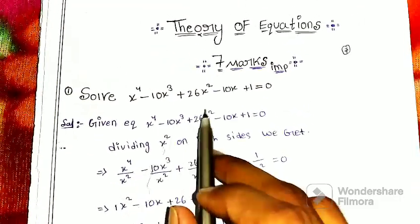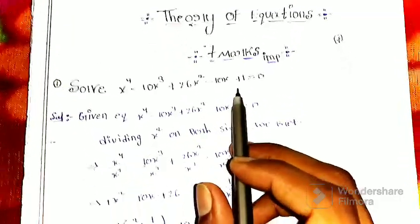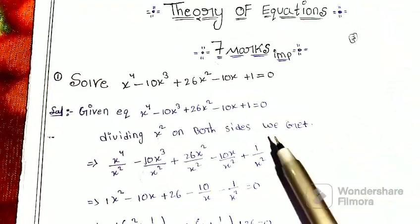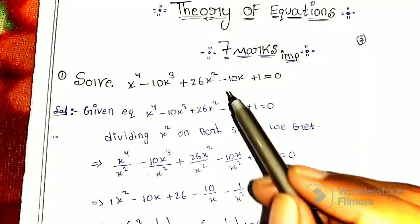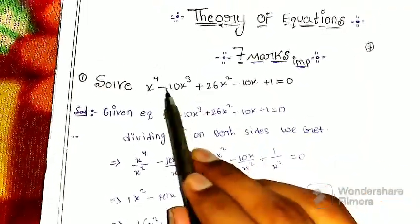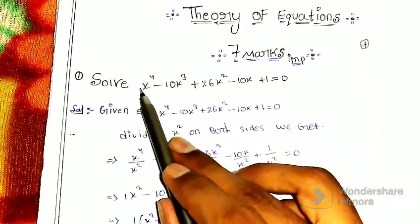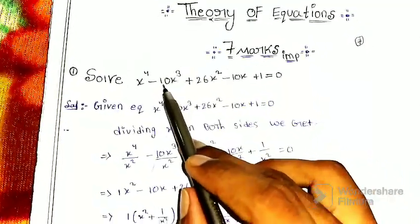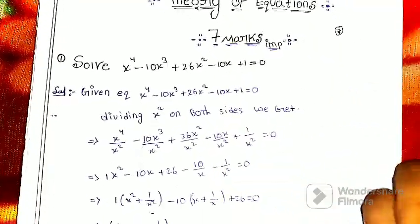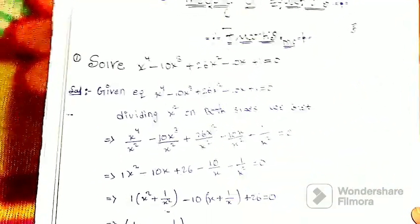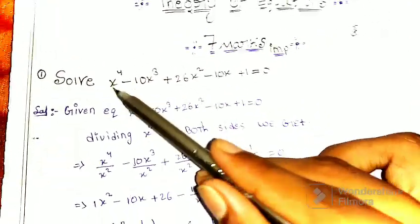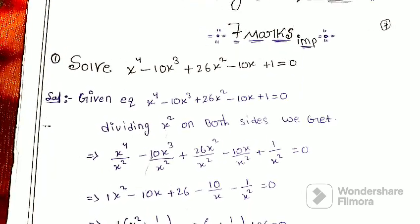This type of equation is called a reciprocal equation. What is a reciprocal equation? The coefficients are the same — the coefficients are symmetric. This is a reciprocal equation.